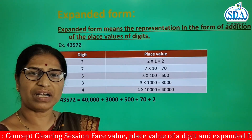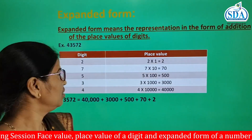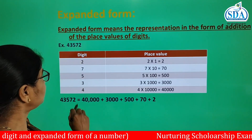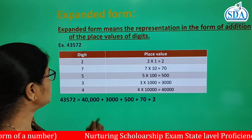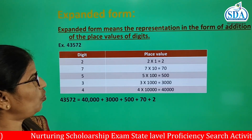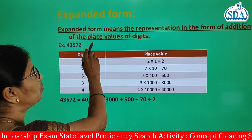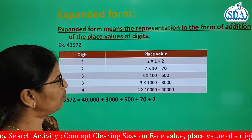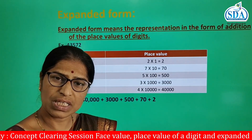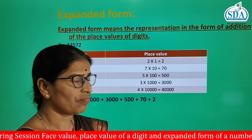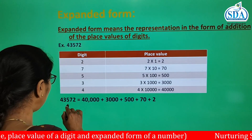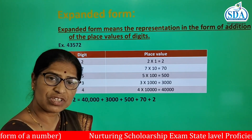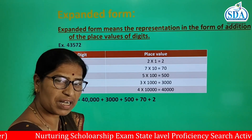Now the next topic: expanded form. The expanded form of a number is the representation of the number in the form of addition of the place values of each digit. Again, the same number 43,572 is considered as an example. Each digit is given and the place value of each digit is determined.